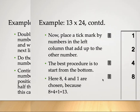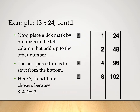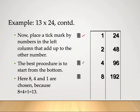We place tick marks on the numbers in the left column that add up to the other number, 13. We need to find numbers that sum to 13, just like in binary systems. Starting from the bottom: 8 plus 4 is 12, plus 1 is 13. So we place tick marks on the rows containing 8, 4, and 1.